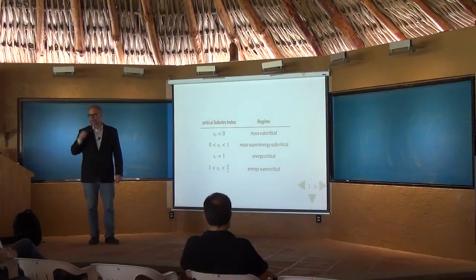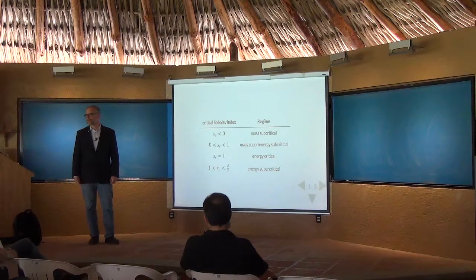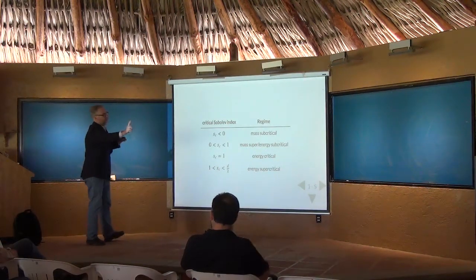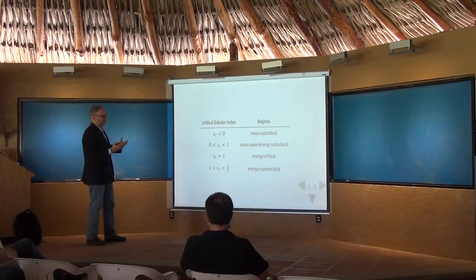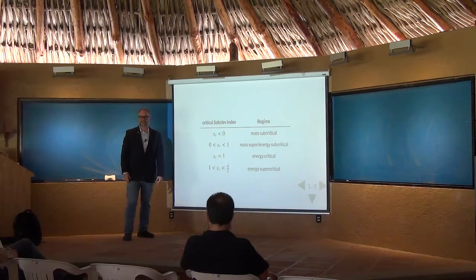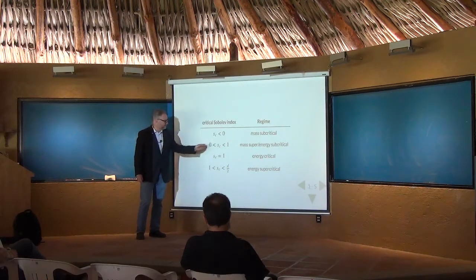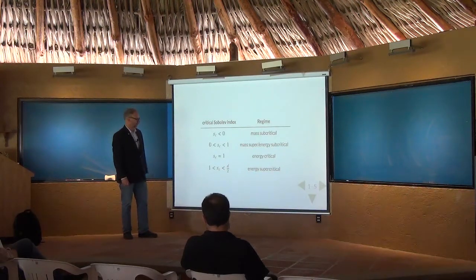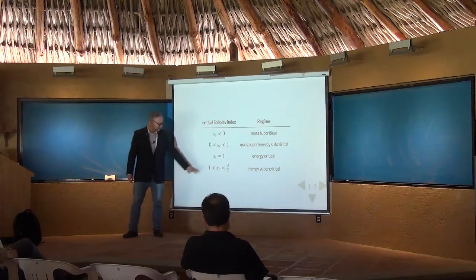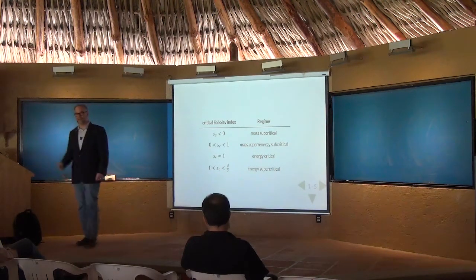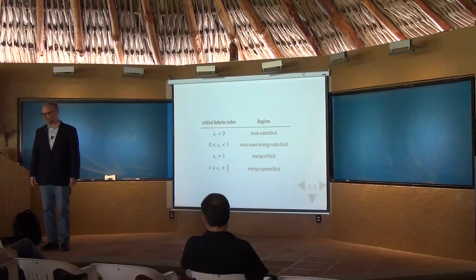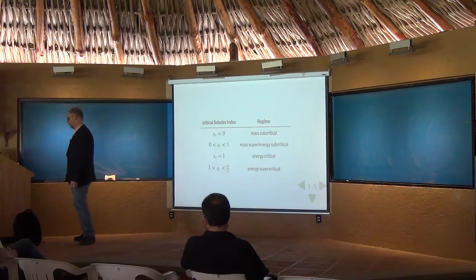In this problem there are conserved quantities. One is associated with the L2 norm — often called the charge or mass. The other is the energy, associated with one derivative in L2. Depending on the spatial dimension and the strength of the nonlinearity, there are four interesting regularity regimes: the mass subcritical case; the mass critical case where S_c equals zero; the intermediate regime where the Sobolev criticality is between the energy and the L2 norm; the energy critical case; and then the poorly understood energy supercritical setting — resembling the famous Navier–Stokes question — where very little is often known.